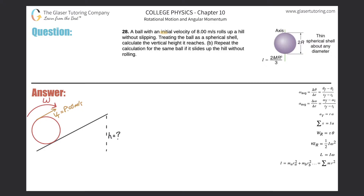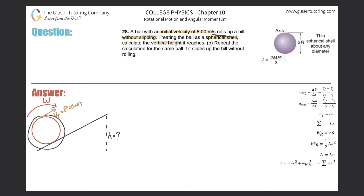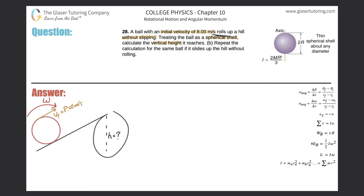Problem 28: a ball with an initial velocity of 8 meters per second rolls up a hill without slipping. Treating the ball as a thin spherical shell, calculate the vertical height it reaches. The ball is rotating as it rolls up the hill, so it has both rotational kinetic energy and translational kinetic energy, and we need to find the height it finally reaches.